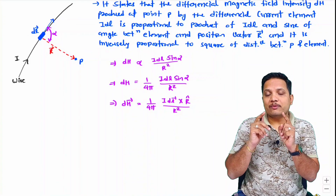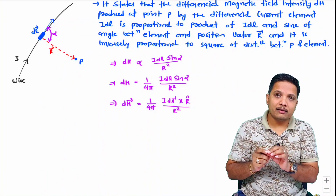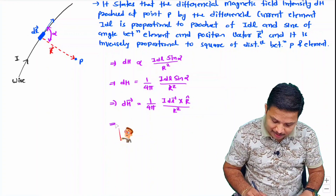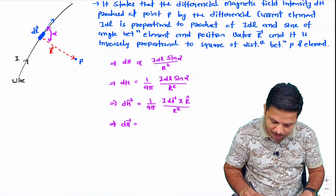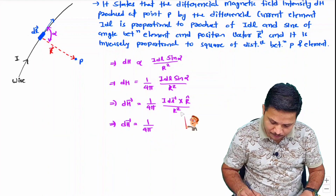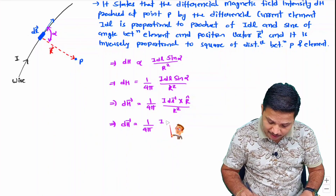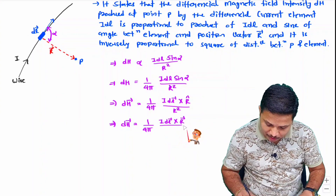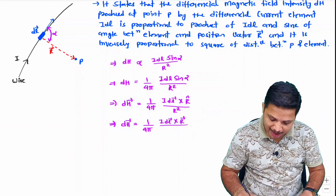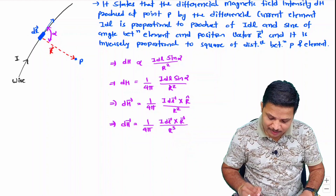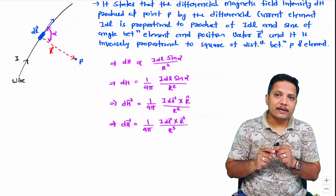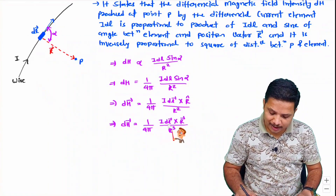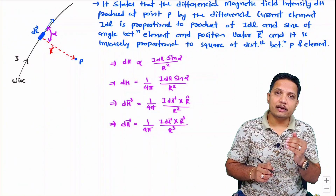Some students say the formula in their book is different, but it is not. I have written the formula with unit vector R̂. Sometimes the formula is given in terms of vector R directly: DH = (1/4π) × IDL × R⃗ / R³, since unit vector R̂ equals vector R divided by magnitude R. So the formula is the same, just represented differently. Both are correct formulas for magnetic field intensity using Biot-Savart Law.